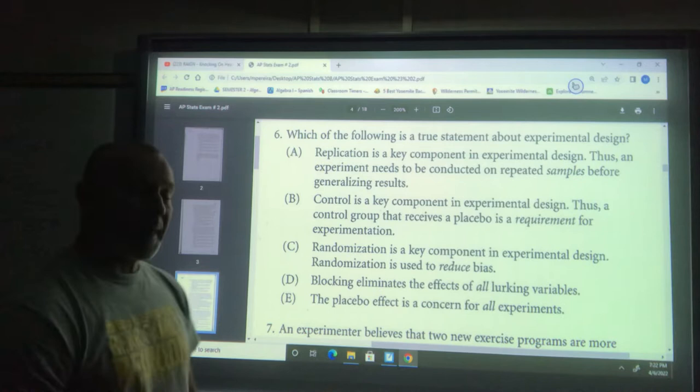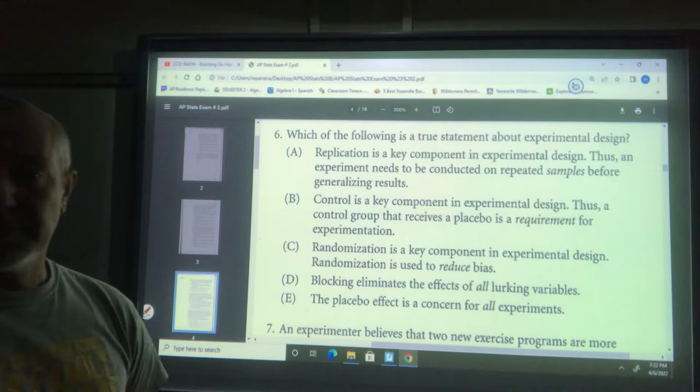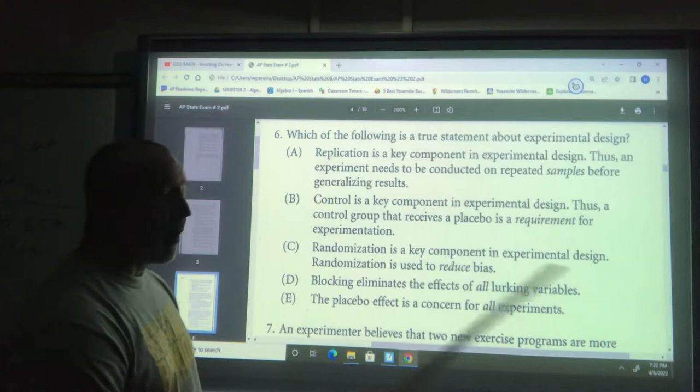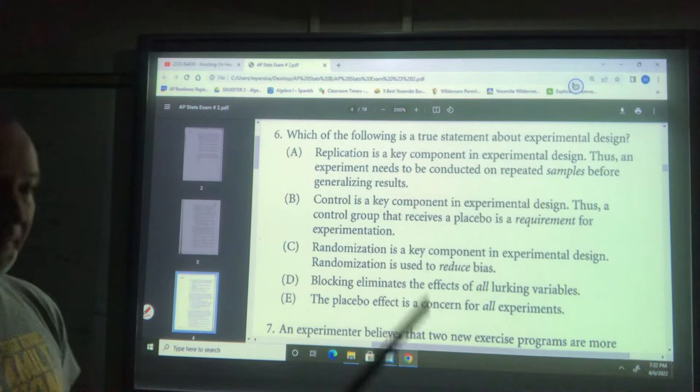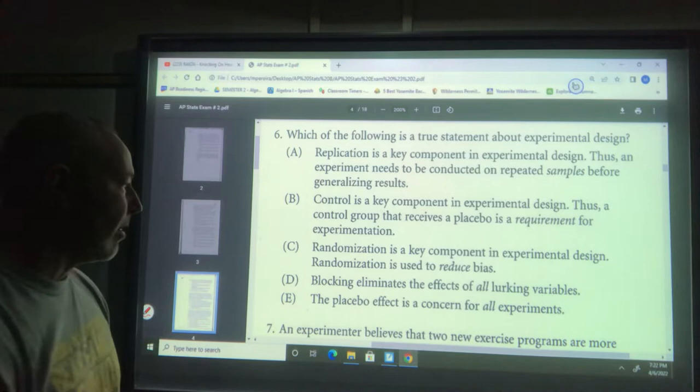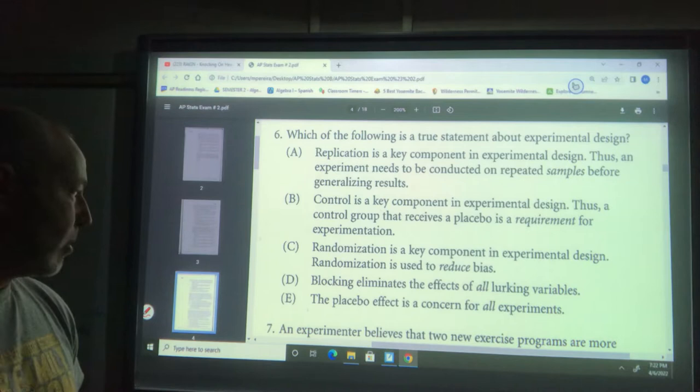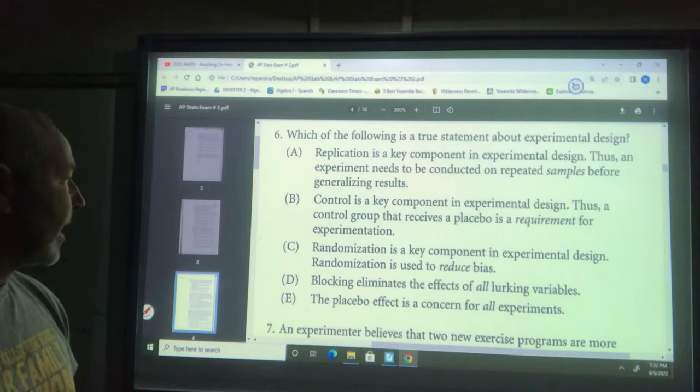Blocking eliminates lurking variables like gender, but it doesn't eliminate the effect of all lurking variables. There are often lurking variables we don't know about, like whether people had a good night's sleep. The placebo effect is not a concern for all experiments - not if there's no placebo. C is the correct choice for number six.